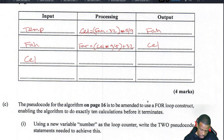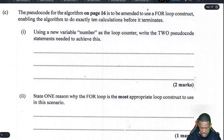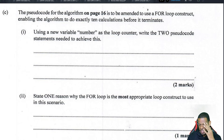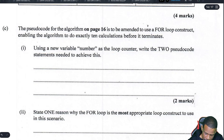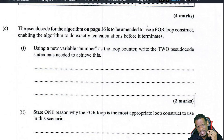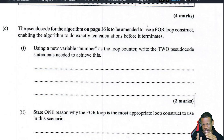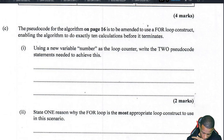Part C says the pseudocode is to be amended to use a FOR loop construct, enabling the algorithm to do exactly 10 calculations before it terminates. This requires a lot of thought and writing, and the marks are quite few — they seem stingy with marks here. The instruction is to use a new variable called number as the loop counter.